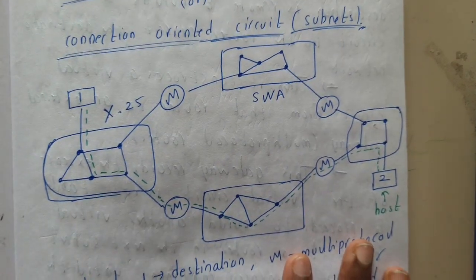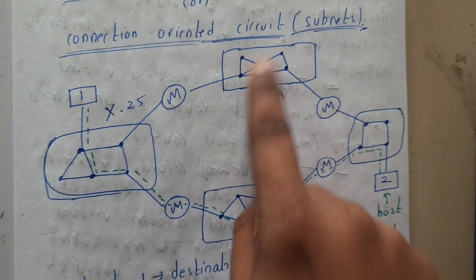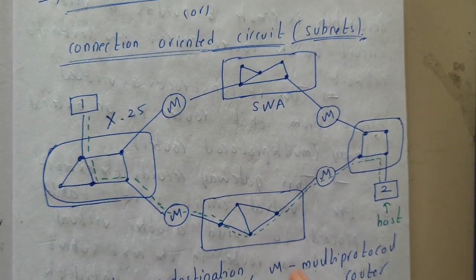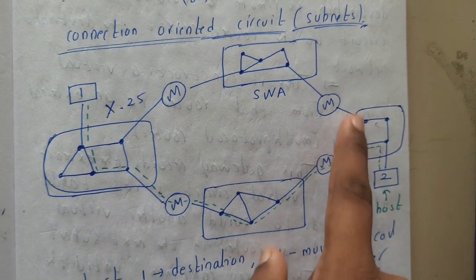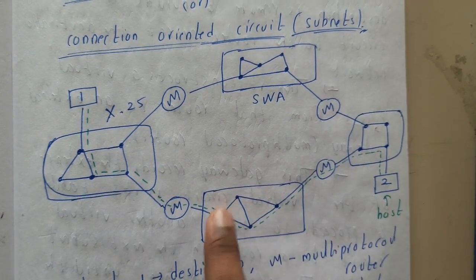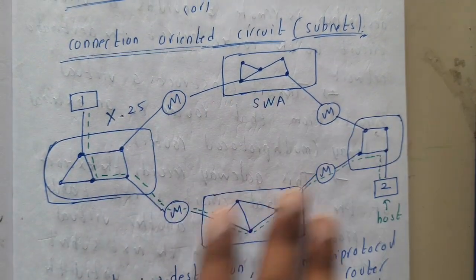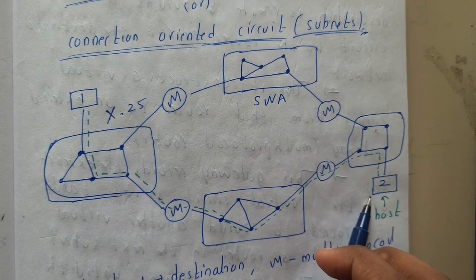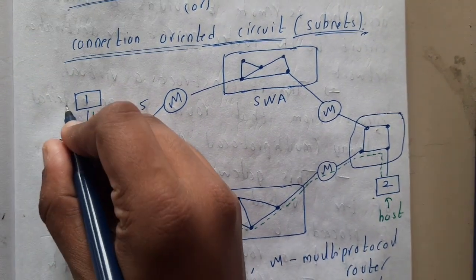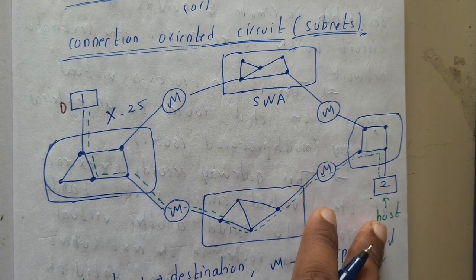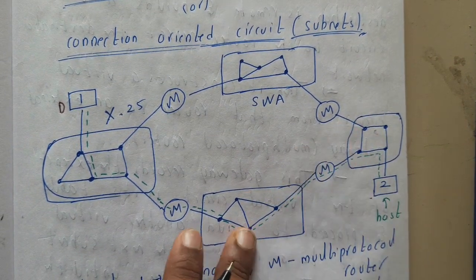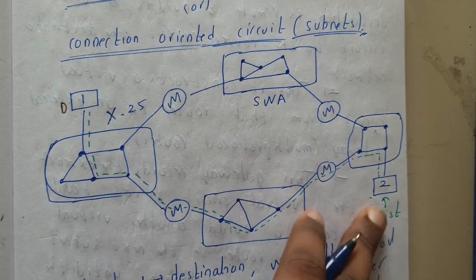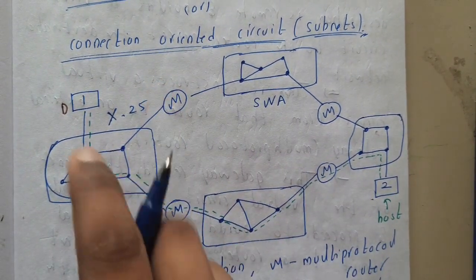Assume these are some networks, each containing multiple devices, represented by different shapes — a square network, a rhombus, and so on. In our diagram, H is the host, meaning the sender who will be sending the data, and D is the destination.